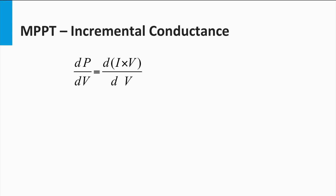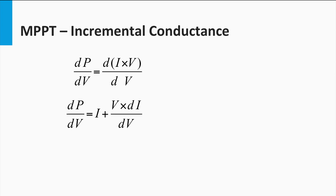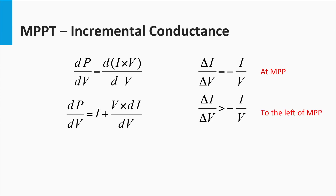Now dP/dV can be written as d(I × V)/dV. Using basic differentiation we get dP/dV = I + V × (dI/dV). If the sampling steps are small enough, then dI/dV can be approximated to ΔI/ΔV. Thus at the maximum power point, ΔI/ΔV = −I/V.